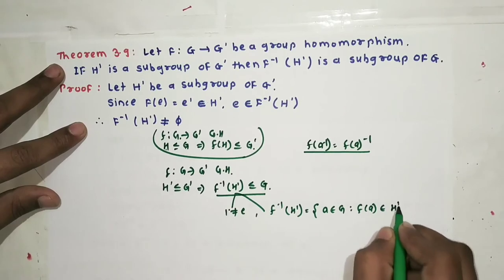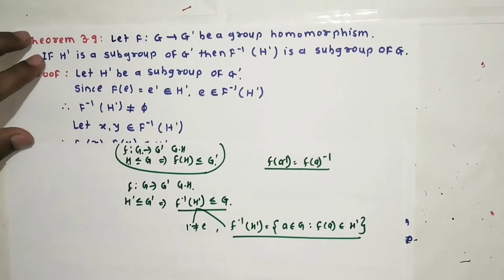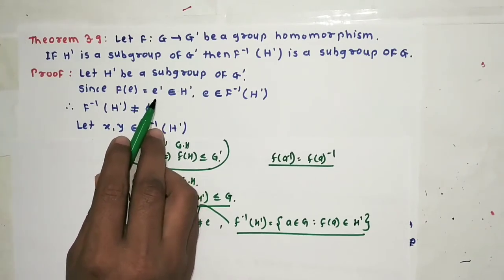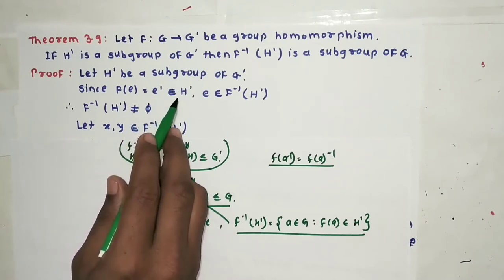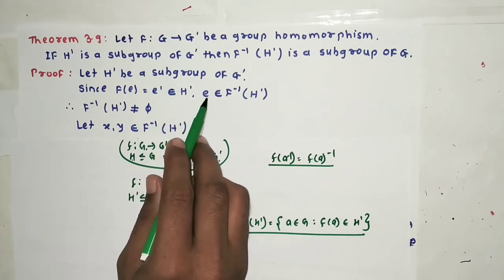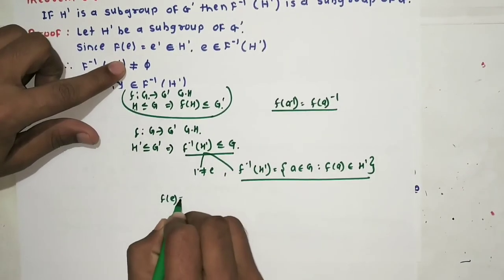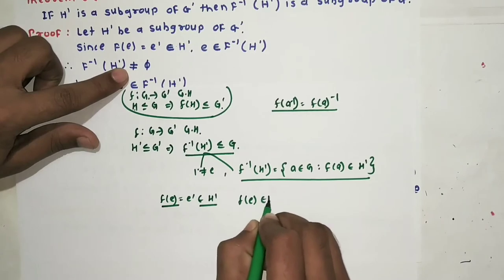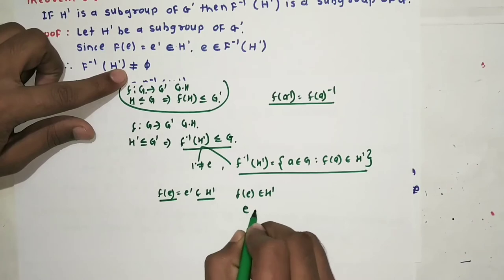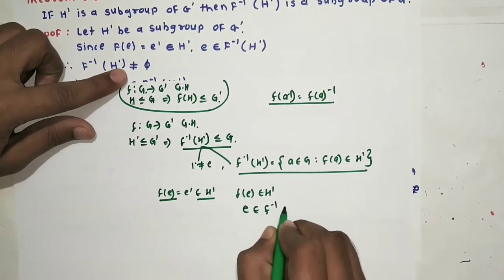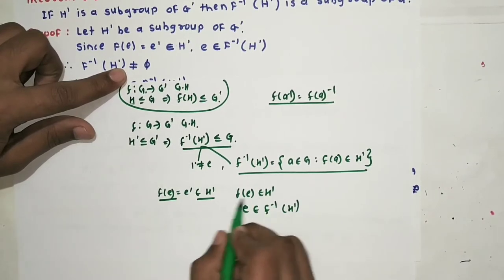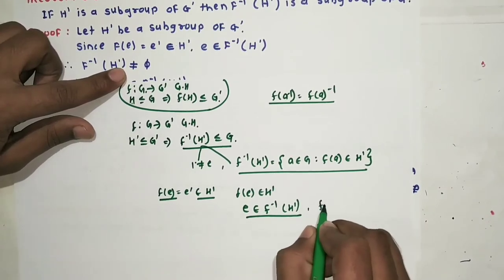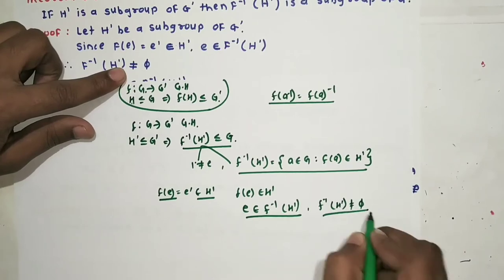Let H' be a subgroup of G'. Since f(e) = e' and e' belongs to H' (as H' is a subgroup and contains the identity), we have f(e) = e' belongs to H'. Therefore e belongs to f⁻¹(H'), so f⁻¹(H') is non-empty.